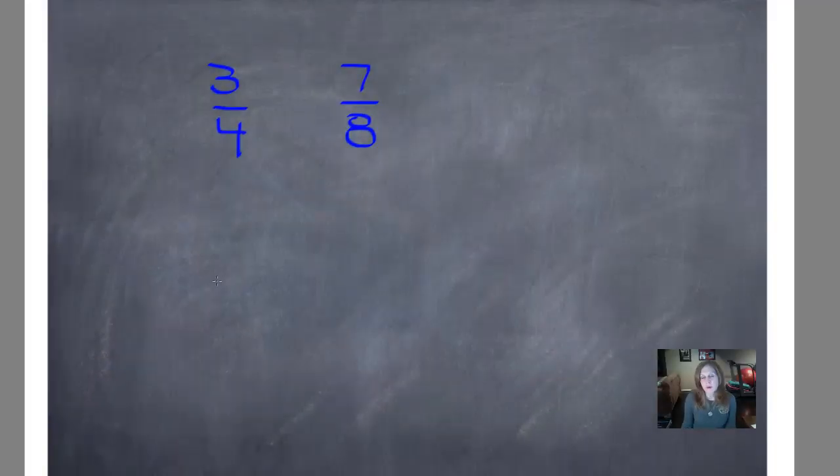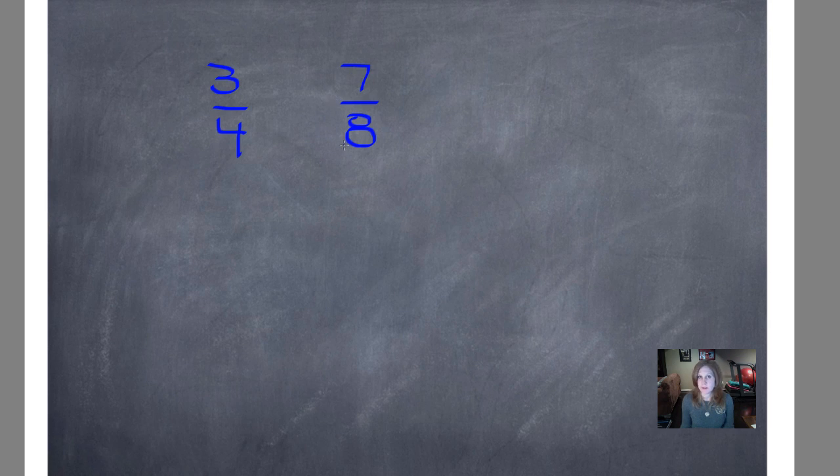We're going to use cross-multiplying to determine if three-fourths is equivalent to seven-eighths. When we cross-multiply, we always start with the denominator, and we cross up to the numerator, and then we're going to start with this denominator and cross up to the numerator. So, you can see that we make a cross in the middle that looks like a multiplication symbol. We always write our answer on top, so let me show you what I mean.